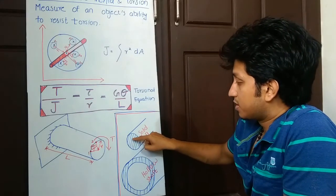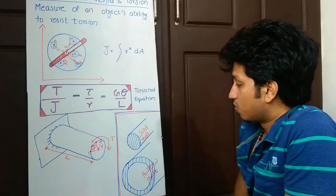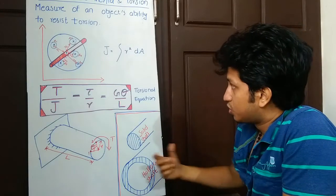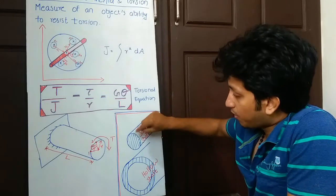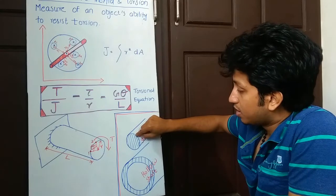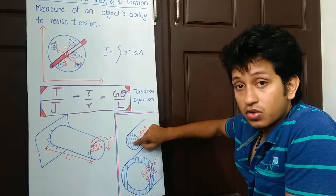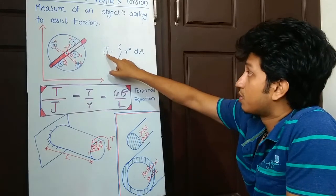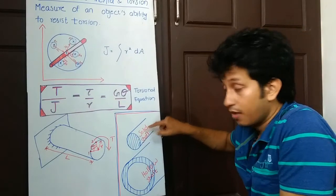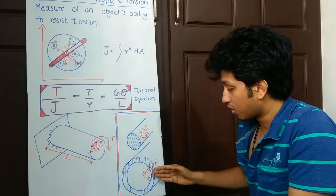The center part would contribute very less to the polar moment of inertia. A point here would contribute more; the same point if it was at the center would contribute less to the polar moment of inertia because its radius is smaller at center and bigger at the outer end.